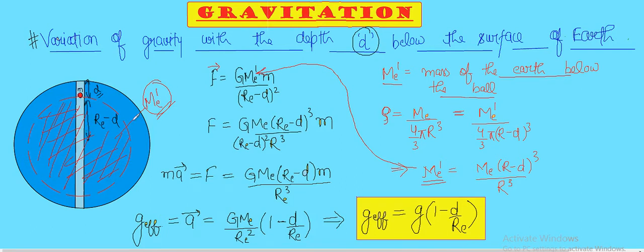So when I make this substitution, the force we get is GM_e(r_e - d)^3 upon (r_e - d)^2 times r_e^2 times m. You can do this yourself, just you need to give it one single try and you can get it right like this.